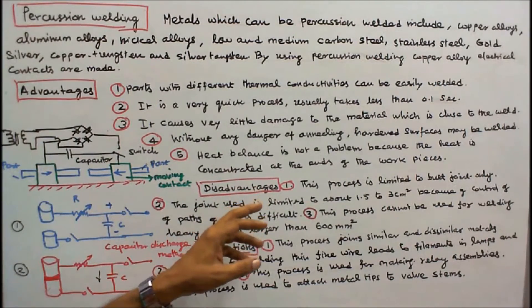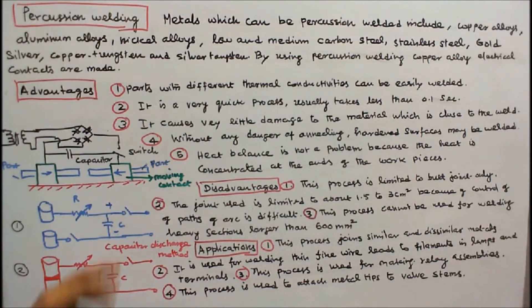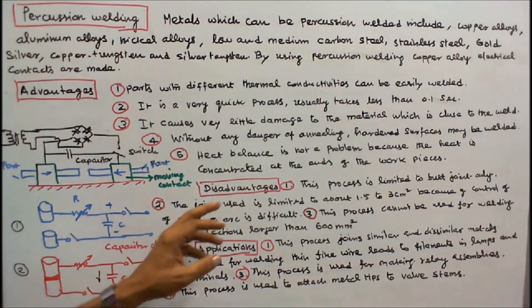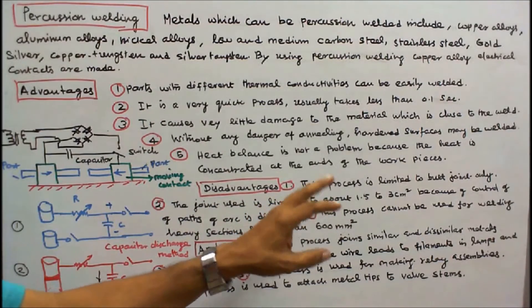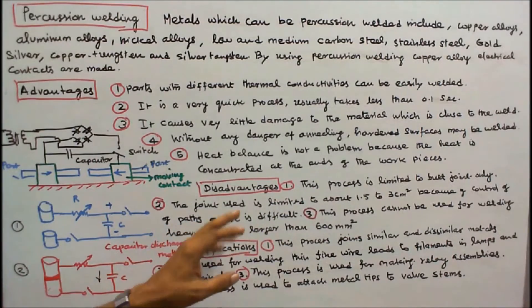Disadvantages are: number one, this process is limited to butt joint only. Number two, the joint size is limited to about 1.5 to 3 cm square because control of parts of arc is difficult.